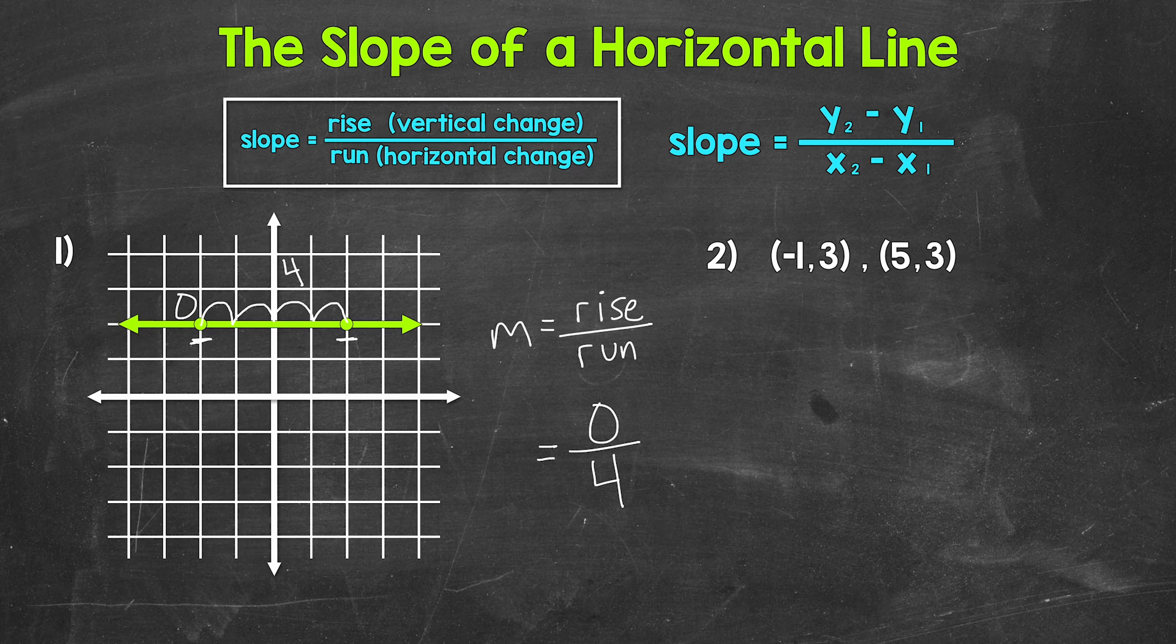Now, any fraction with a numerator of zero, so a top number of zero, equals just zero. So we can also write this as just zero. We would say that this line has a slope of zero, and that goes for any horizontal line. Any horizontal line has a slope of zero.